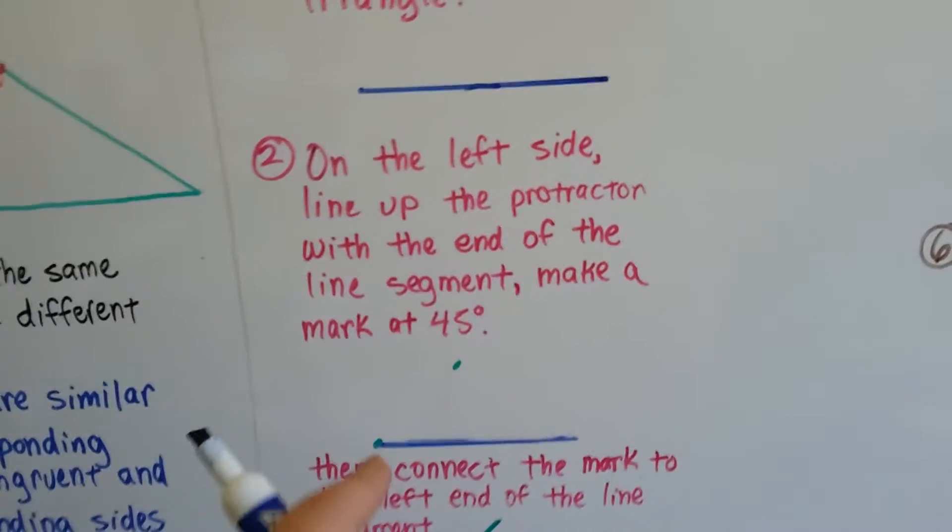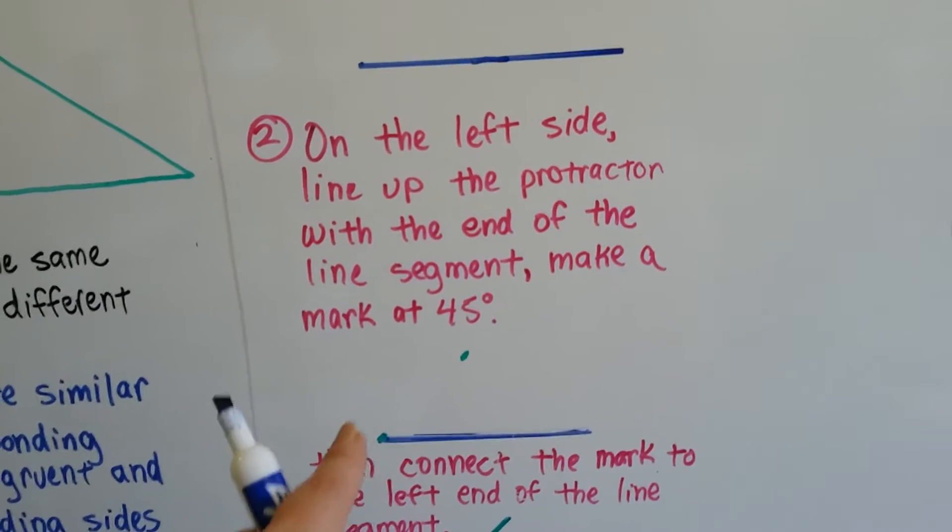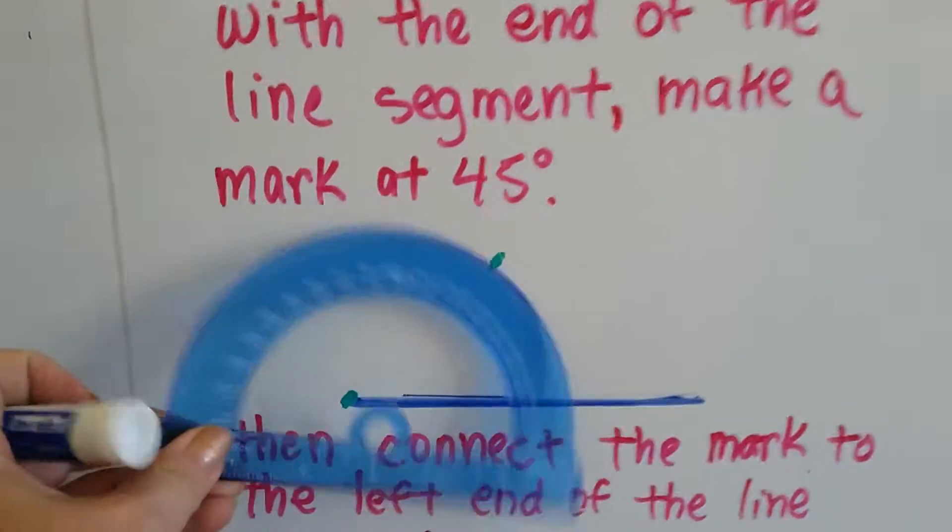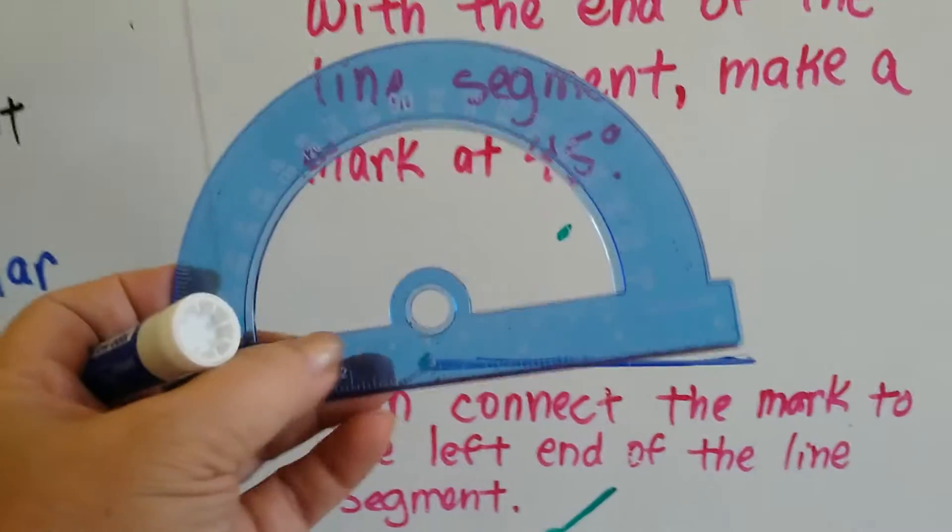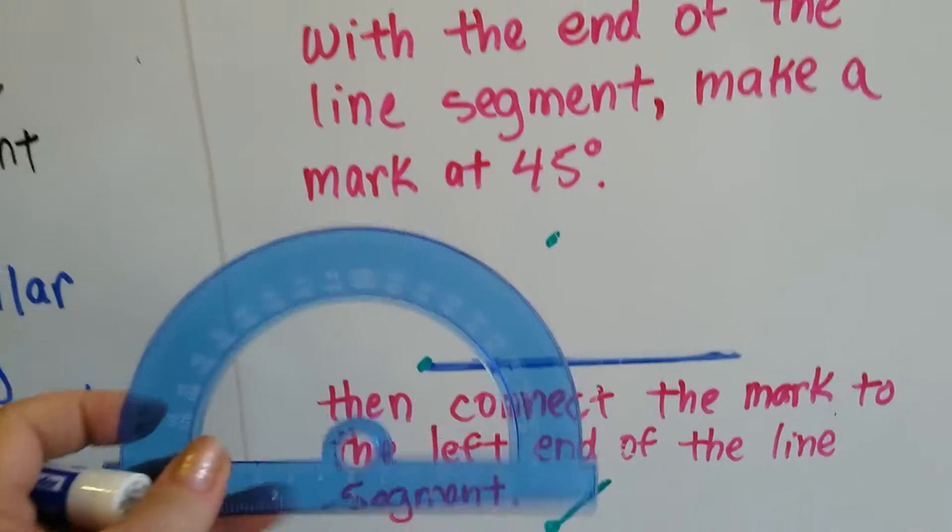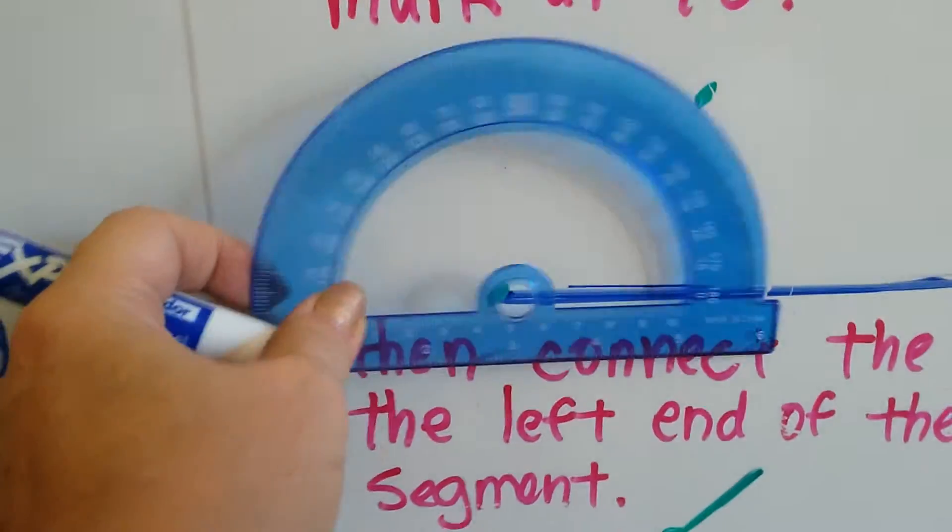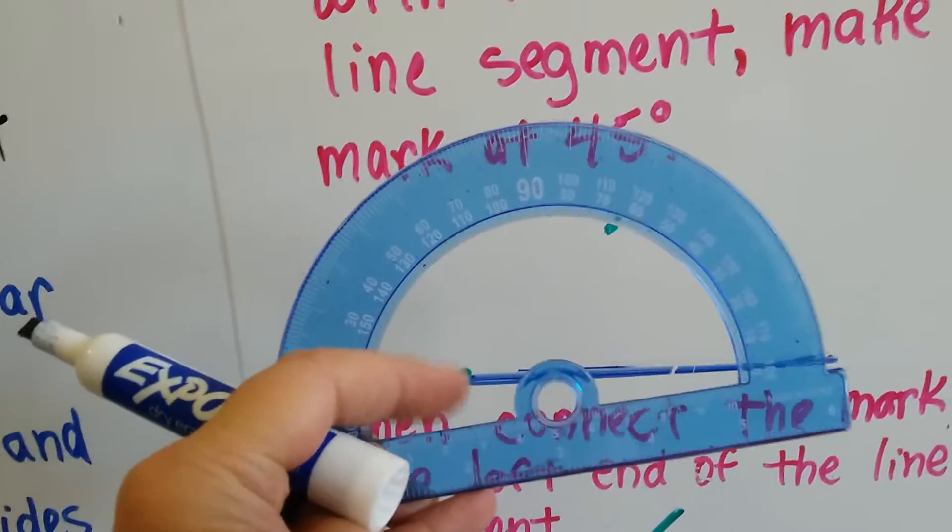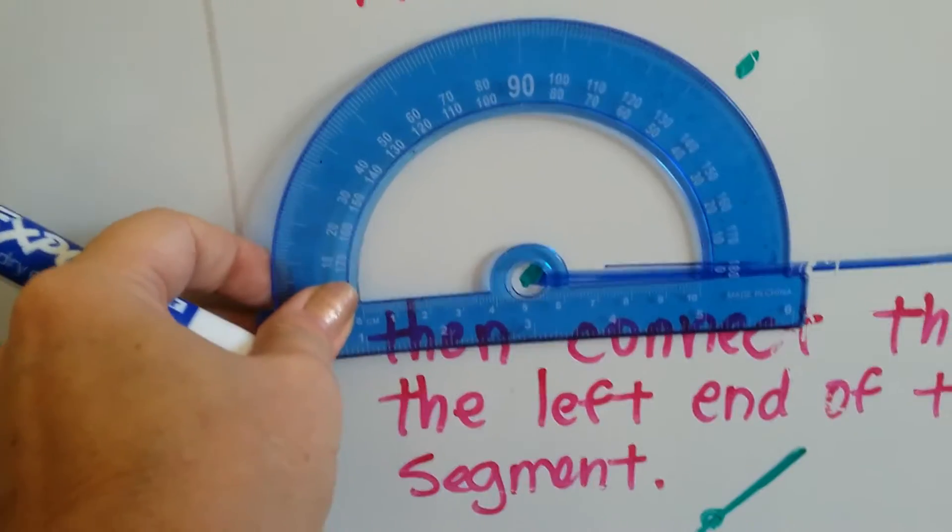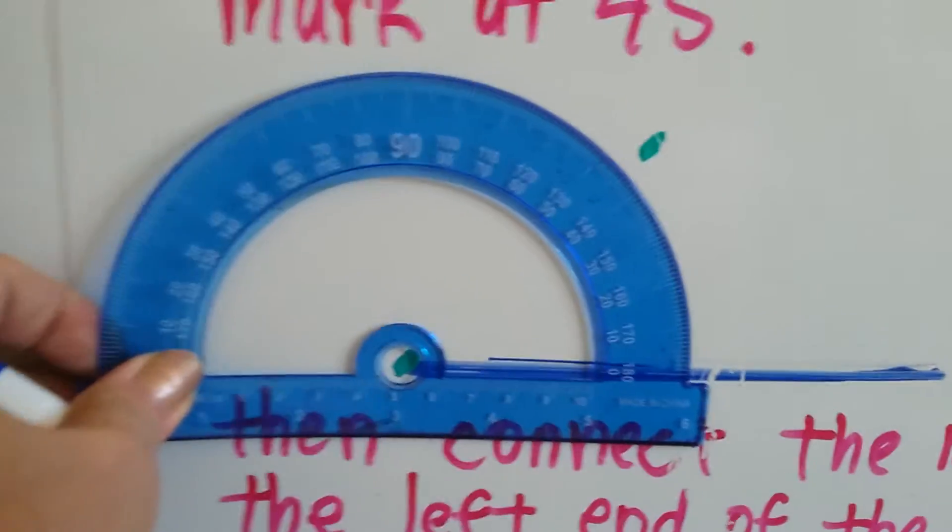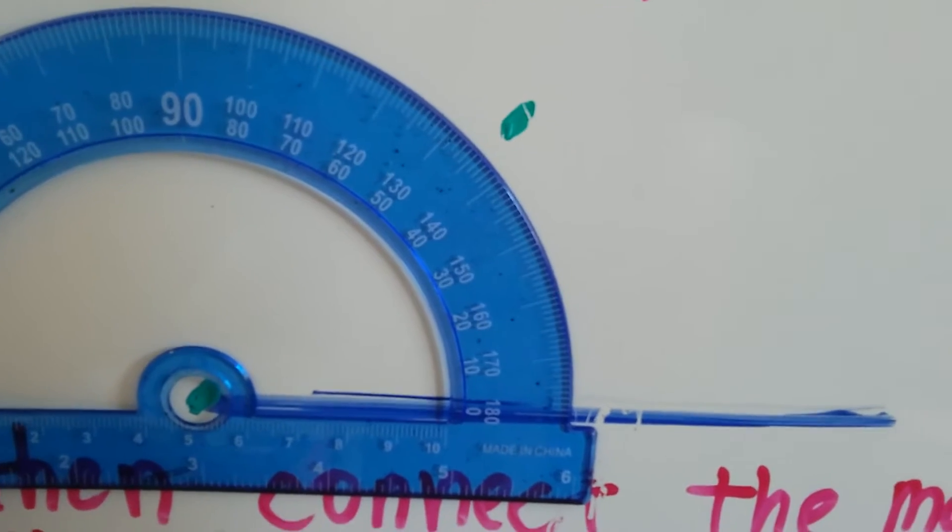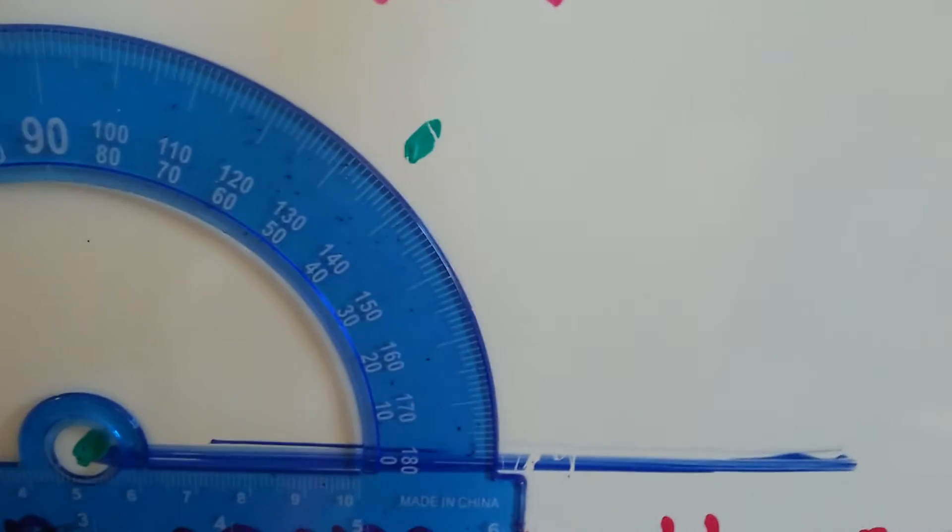On the left side of this line segment down here, we're going to line the protractor up with the end of the line segment. So see the circle right here in the center? We're going to put that on the end of the line segment and we're going to look for the 45-degree angle. So we're going to line it up like this and see this part of the protractor is going to be right under the line with the end of the segment right in the center of the circle. And then we're going to put a mark right at the 45-degree mark. Can you see where it's in between 40 and 50 degrees right here?